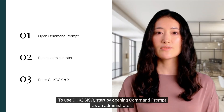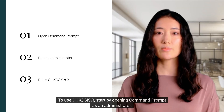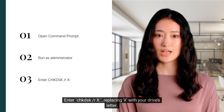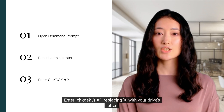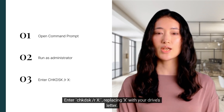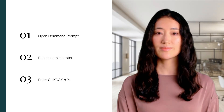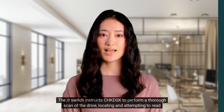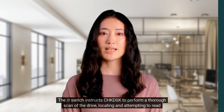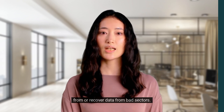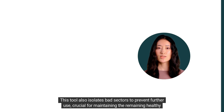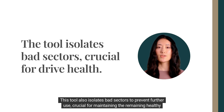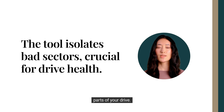To use CheckDisk /R, start by opening Command Prompt as an administrator. Enter 'chkdsk /r X', replacing X with your drive's letter. The /R switch instructs CheckDisk to perform a thorough scan of the drive, locating and attempting to read from or recover data from bad sectors. This tool also isolates bad sectors to prevent further use, which is crucial for maintaining the remaining healthy parts of your drive.